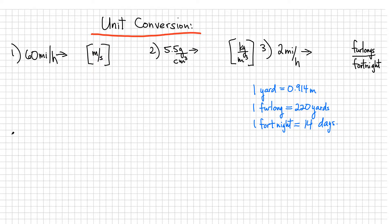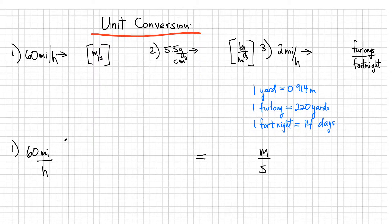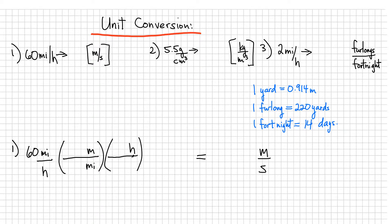Let's do the first one: 60 miles per hour, and at the end I want to convert that into meters per second. I need to eliminate miles — so I set up a bracket with meters. Then I have hours and I need to convert that to seconds. I can do it in steps: go to minutes first, then eliminate minutes and introduce seconds. So I set up two time brackets.